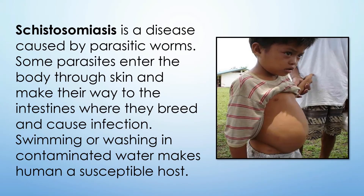Schistosomiasis is a disease caused by parasitic worms. Some parasites enter the body through the skin and make their way to the intestines, where they breed and cause infection. Swimming or washing in contaminated water makes humans a susceptible host.